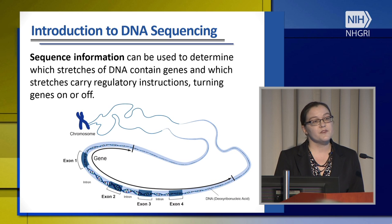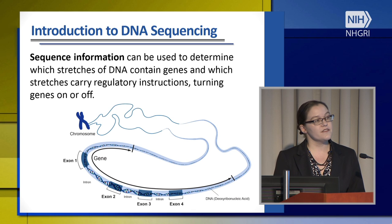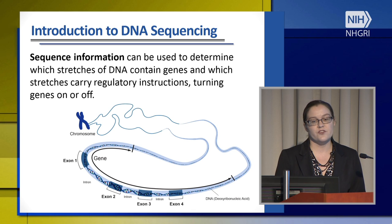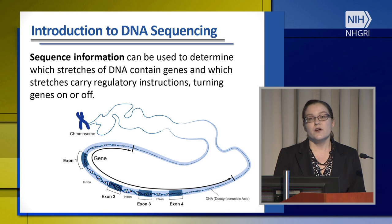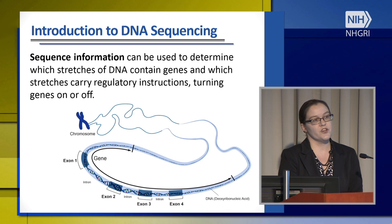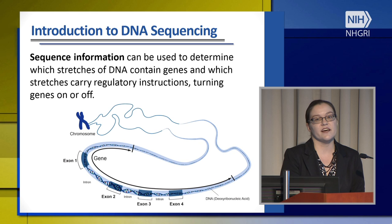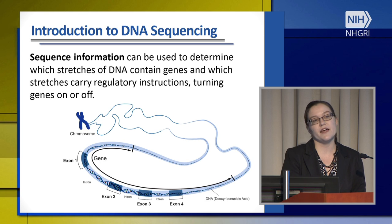From sequence information, we can determine which stretches of DNA contain genes, and furthermore, where there are regulatory stretches which contain instructions that let us know whether the genes are turned on or off. From this information in the genes, we can also find regions which are just the exons or coding regions. In these regions, we can sometimes find variants that are associated with disease.